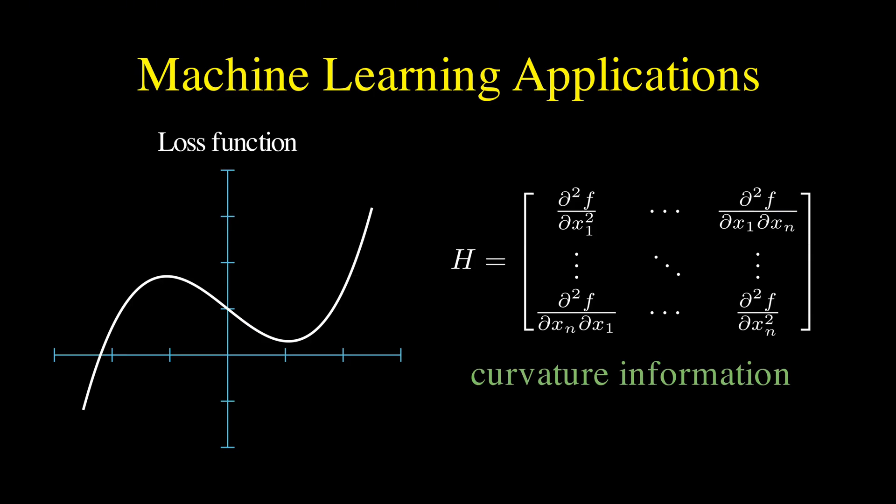which sounds incredibly valuable because if you knew the curvature, we could make much smarter steps during optimization, taking big steps where the function is flat, and small steps where it's curving sharply. And this would theoretically allow us to converge to a minimum much faster than simple gradient descent.